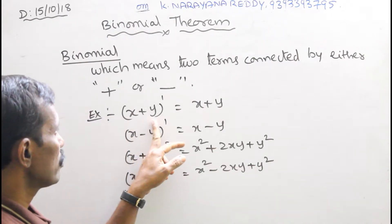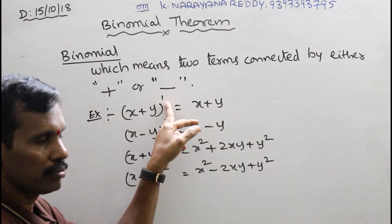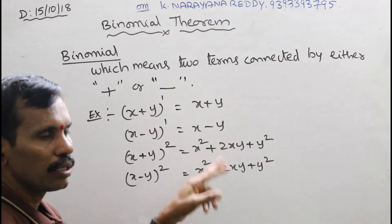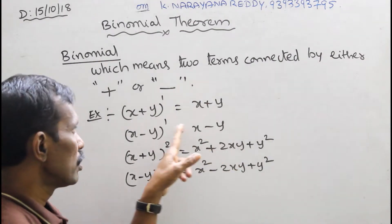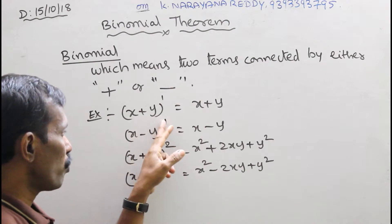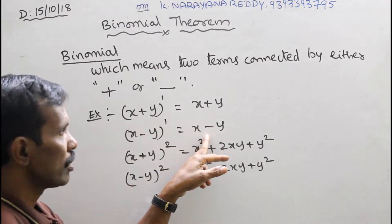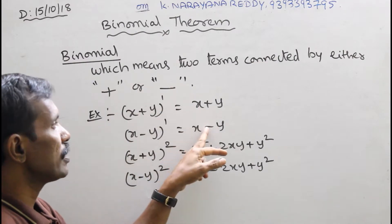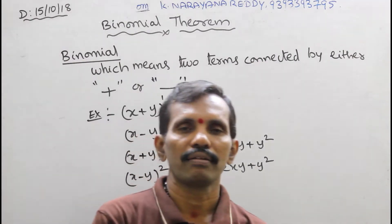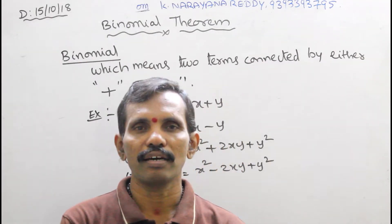For example, x plus y whole to the power of 1 equals x plus y — here the index is 1, the exponent is 1, so there are 1 plus 1, that is 2 terms: x plus y. Similarly, x minus y whole to the power of 1 equals x minus y — here minus is there. So plus is there and minus is there, that is why we call it binomial — only plus or minus.